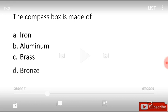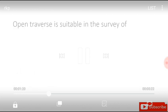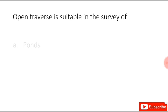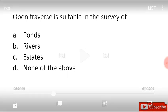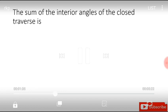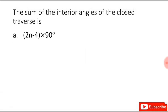The sum of the interior angles of the closed traverse is. The options include various formulas involving n.